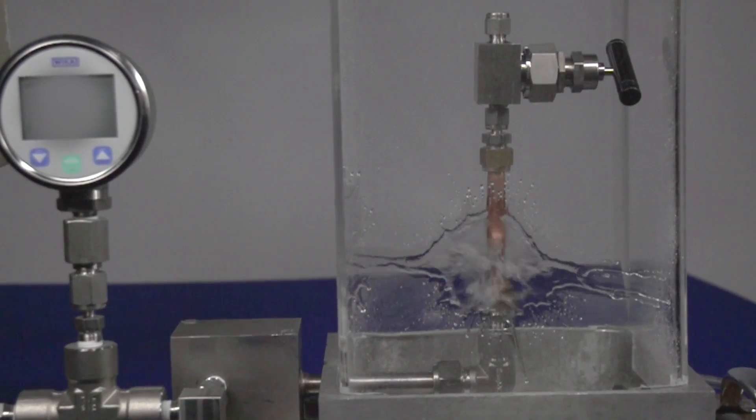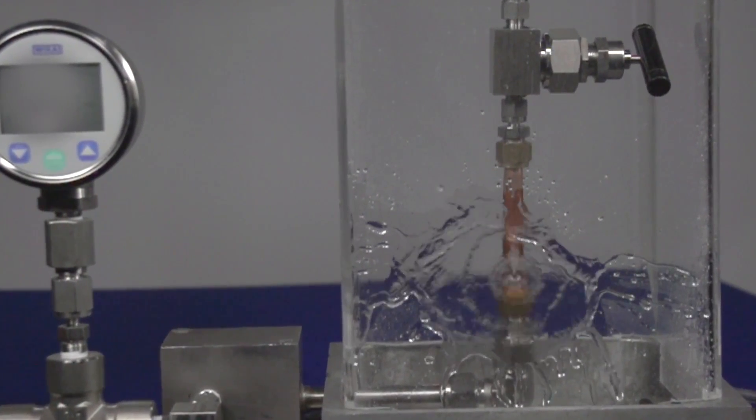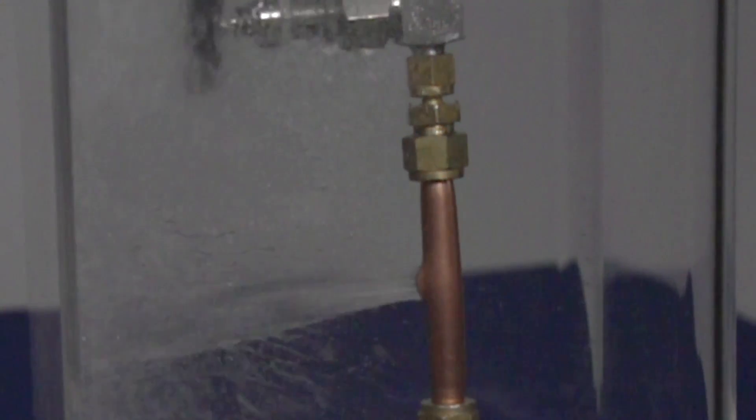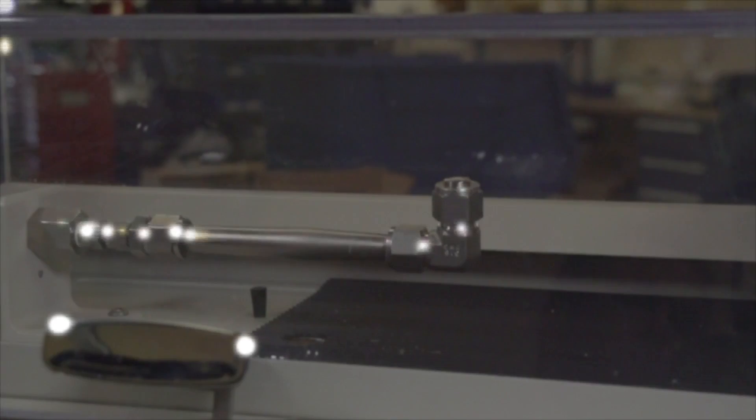In the demonstration we install a 3/8 inch brass tube fitting on properly selected same size copper tubing, place the assembly in our burst chamber and then we ask attendees to guess at what pressure the tubing will burst. And finally we burst the tubing.